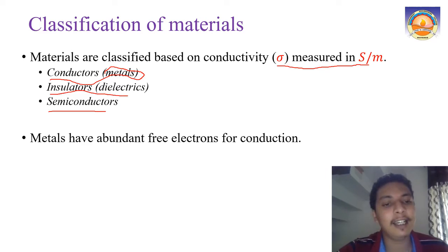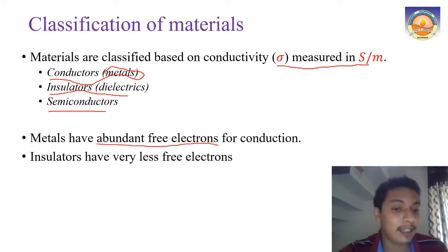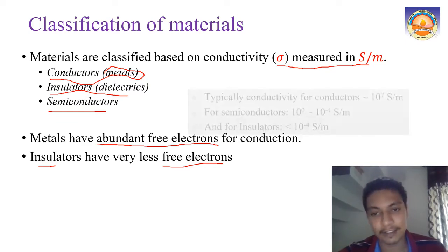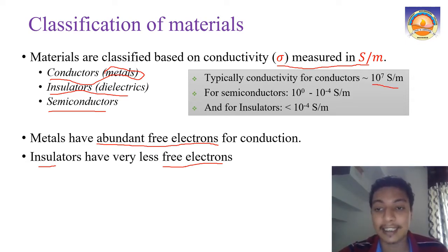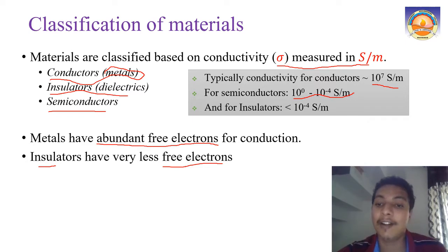The main difference between conductors and insulators is that metals have an abundant number of free electrons for conduction, whereas insulators have very few free electrons for current conduction. That is the major difference and that is why their conductivity values differ. The typical conductivity value for conductors is 10^7 siemens per meter. For semiconductors it is in between. We call something an insulator whenever its conductivity is lesser than 10^-4 siemens per meter.